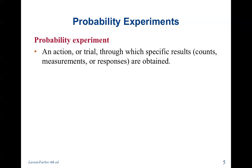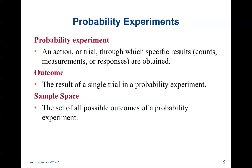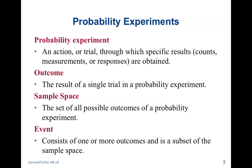A probability experiment is any action or trial through which specific results, counts, measurements, or responses are obtained. The outcome is the result of that trial. The sample space is all possible outcomes of the probability experiment, and the event consists of one or more outcomes that is a subset of the sample space. So probability experiment is the action, the result is the outcome, all possible outcomes is the sample space, and the event consists of one or more outcomes that is a subset of the sample space.